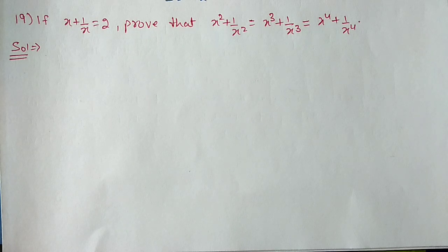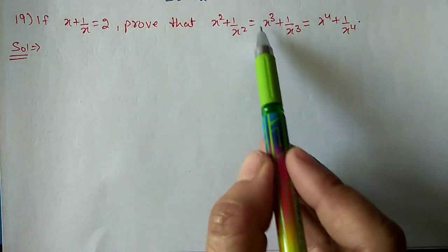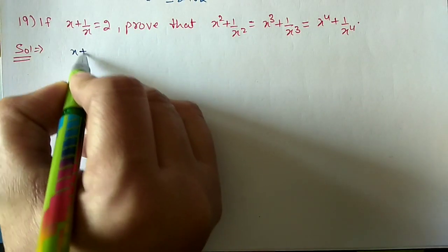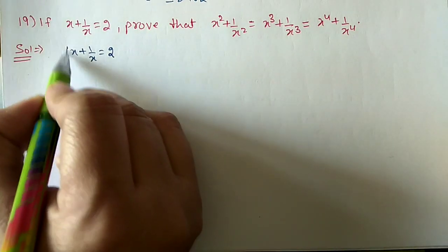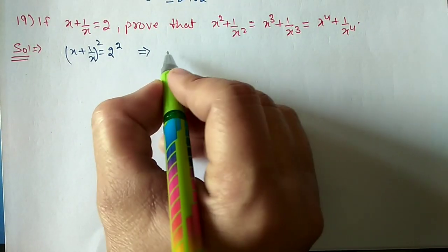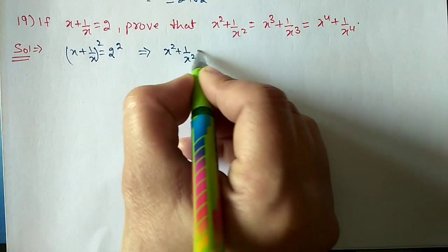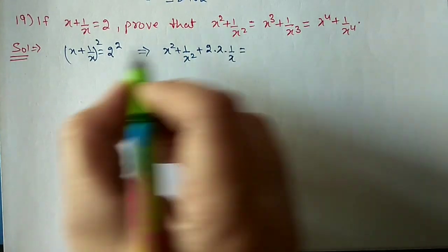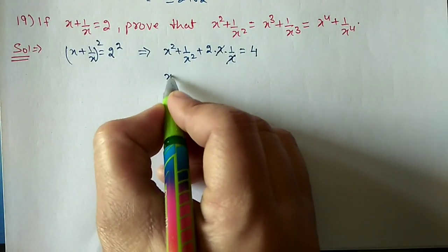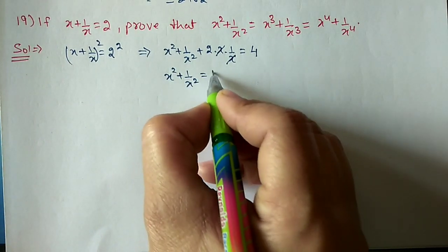Question 19: If x plus 1 by x is equal to 2, prove that x square plus 1 by x square equals x cube plus 1 by x cube equals x to the power 4 plus 1 by x to the power 4. We have to show all three values are the same. Starting with squaring both sides: using a plus b whole square formula, a square plus b square plus 2ab equals 2 square which is 4. The x terms cancel, so x square plus 1 by x square equals 4 minus 2, which is 2.